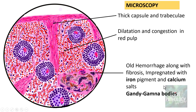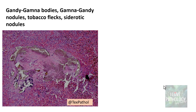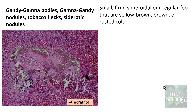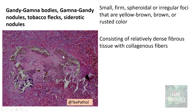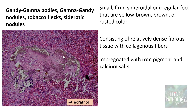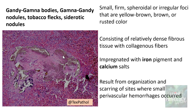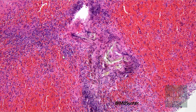You can see old hemorrhage along with fibrosis impregnated with iron pigment and calcium salts — these are Gamma-Gandy bodies. These are small, firm, spheroidal or irregular foci that are yellow-brown or rust-colored. They consist of relatively dense fibrous tissue with collagenous fibers impregnated with iron pigment and calcium salts. They form from the organization and scarring of sites where small perivascular hemorrhages occurred.